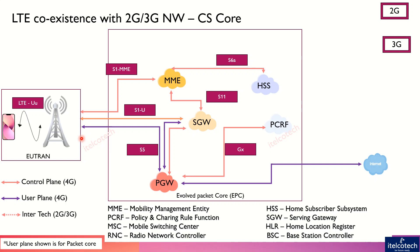Now, this is primarily about the packet core network. But what happens if the user wants to use voice services while connected to the LTE network — for example, to make or receive a call? In that case, we need a certain kind of provisioning where the circuit-switched call falls back to the legacy technology.